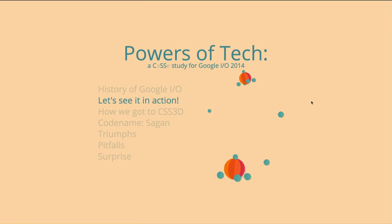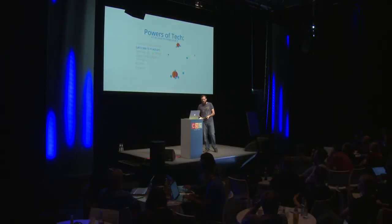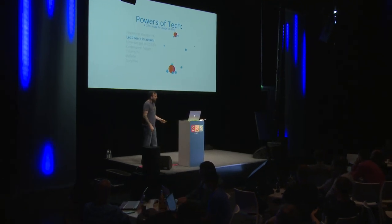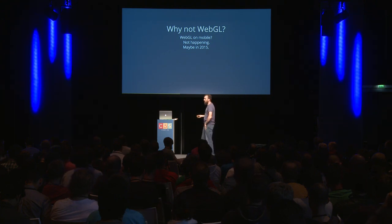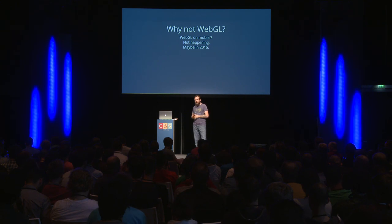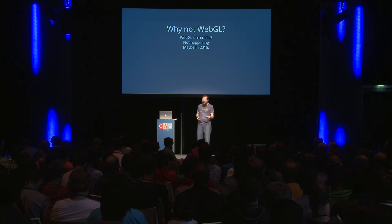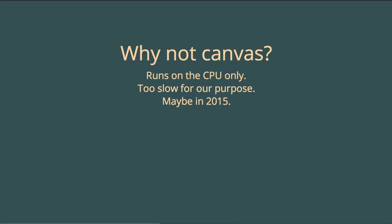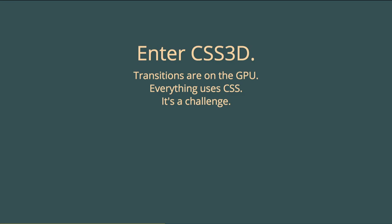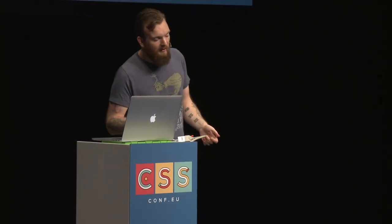That was all in CSS3D. You can click on any of those elements, explore it, see the transforms happening. The thing people keep asking is why did we do it in CSS3D — why not WebGL? WebGL is awesome — you can do shaders and post-processing — but it's just not ready for mobile. It's only just now going on iOS 8, it's hit or miss on the native Android browser, and on Chrome for Android you have to enable it explicitly. Canvas was too slow — your phone doesn't have as much processing power. So we turned to CSS3D: everything can run it, we can have fallbacks, and all the transitions get offloaded onto the GPU.